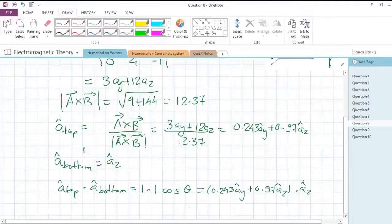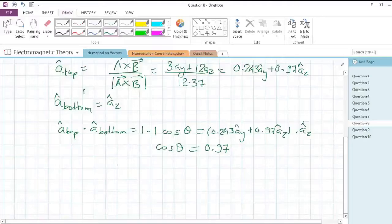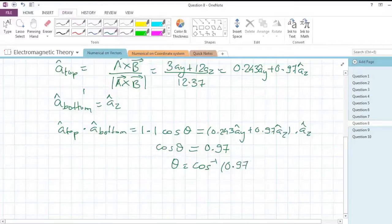You know that only the same direction vectors get multiplied and will result in a constant, that is 0.97. So we finally have cos theta = 0.97, and for this we can find theta = cos inverse of 0.97, which gives us 14.07 degrees.